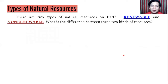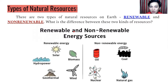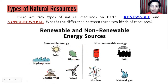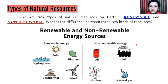What are the different types of natural resources? There are two types: renewable and non-renewable. What is the difference between these two? In renewable energy, we have solar — from the sun; hydropower — from water; biomass — from living things; geothermal — from the heat of the ground; and wind. On the other hand, non-renewable energy includes oil, coal, nuclear, and natural gas. Let us dig deep into each type of resource.